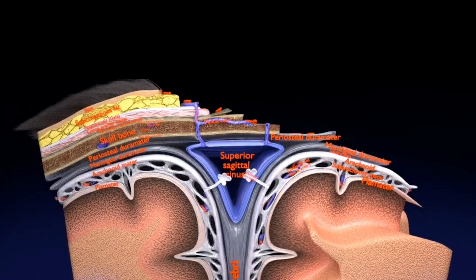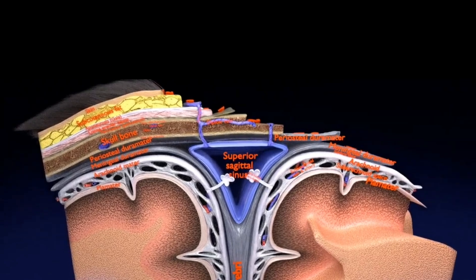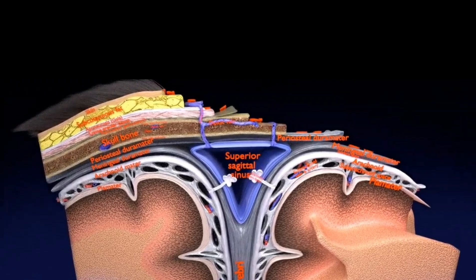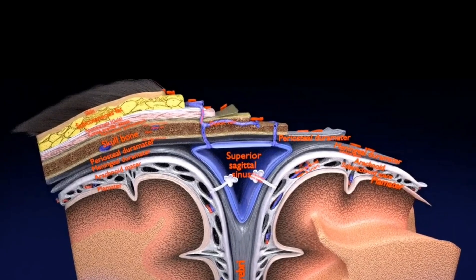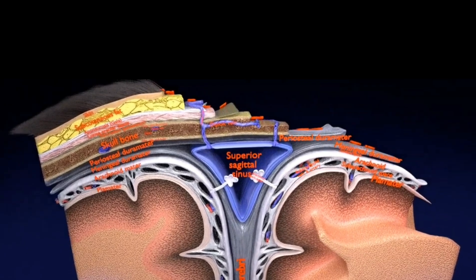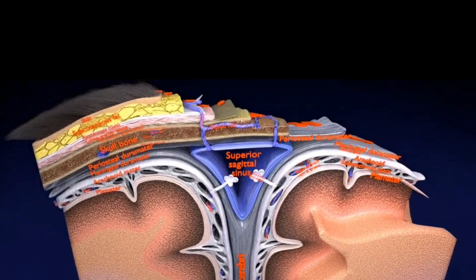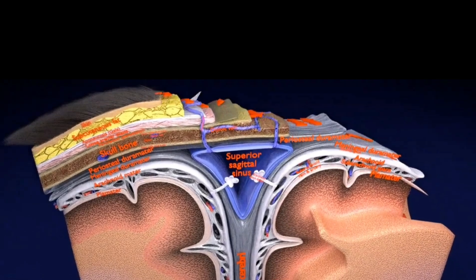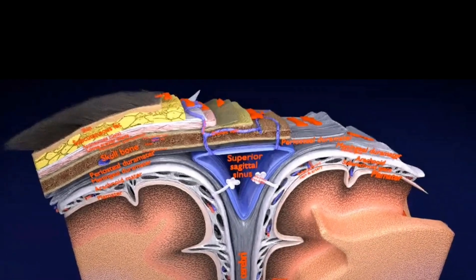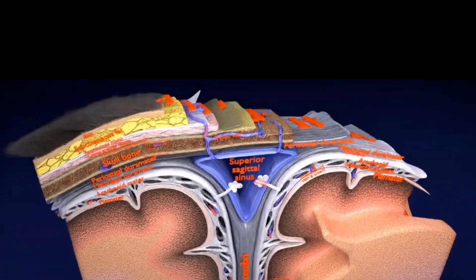The layers in the head, in sequence from outside to inside, start with the scalp, followed by the skull or cranium, next the meninges, and the deeper brain parenchyma.